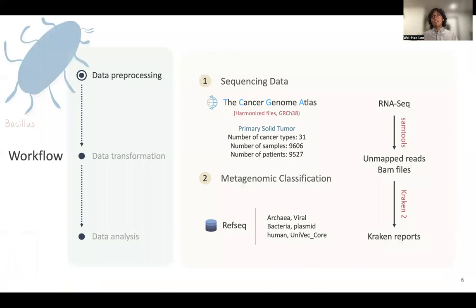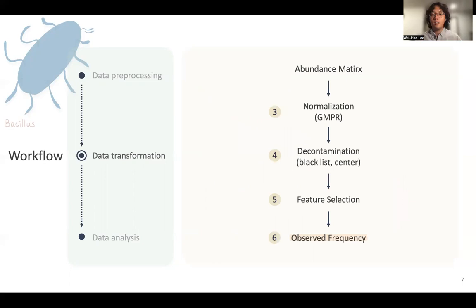Our workflow can be broken down into several parts, starting from the DNA preprocessing. We downloaded the data from the Cancer Genome Atlas using the latest version, mapped to the version 38 human reference genome. We only kept the primary solid tumor samples, removed the human reads, and used the unmapped reads. We used Kraken 2 for metagenomic classification, and we still imported the human reference genome to do our best to remove contaminants from the human reads. After obtaining those microbial abundance data, we performed a series of preprocessing steps including normalization, decontamination, feature selection, and we applied a newly devised transformation method called observed frequency.